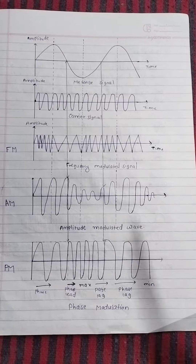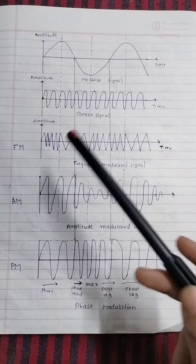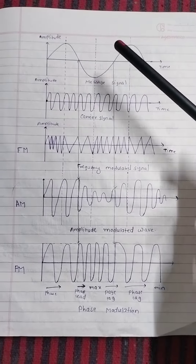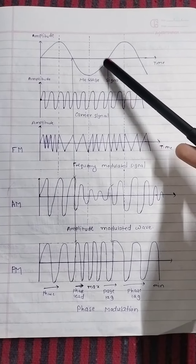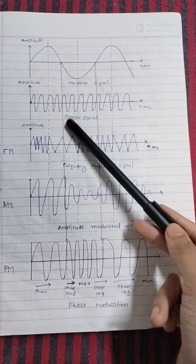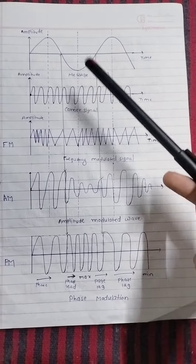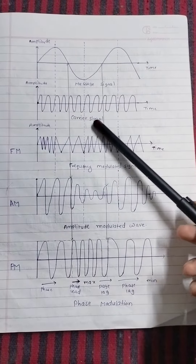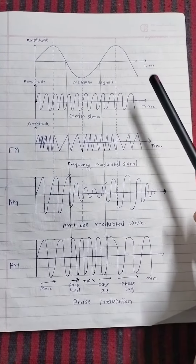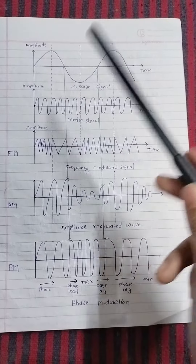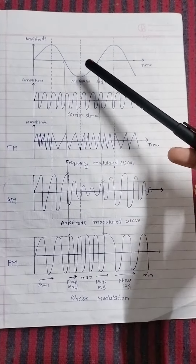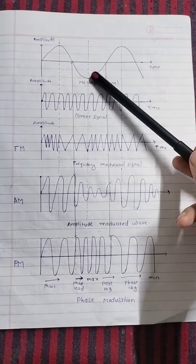Welcome to the channel. Today we are going to see about FM, AM, and PM — that is frequency modulation, amplitude modulation, and phase modulation. This is the message signal, also known as the original signal, which has a low frequency. We use a high-frequency carrier signal to reach some destination. Before reaching the destination, this carrier signal is modulated and we get what we call the modulated signal. During this process, the carrier signal changes its parameters according to the original or message signal.